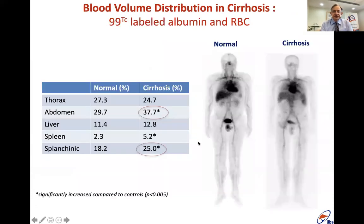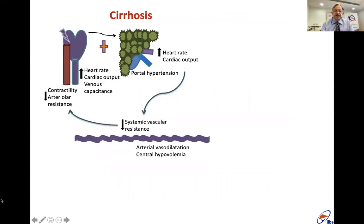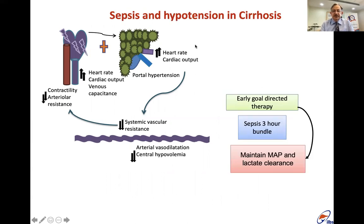In cirrhosis, the abdomen and splanchnic circulation carry much more blood volume than in a healthy person. Cirrhotics have a high cardiac output, low blood pressure, increased plasma volume, decreased red cells — more so in Child C patients. The circulation is hyperdynamic, yet the patient is functionally hypovalemic. There is high sympathetic drive, limited vasoconstriction, increased vascular compliance, and less central blood volume. Heart rate and cardiac output are increased, contractility is low, and patients with portal hypertension have a low systemic vascular resistance.